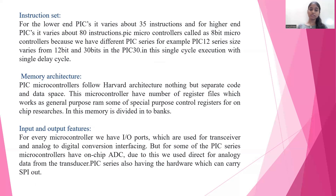There are different types of PIC series; for example, the PIC 12 series size varies from 12-bit up to 30-bit in PIC 30, with single-cycle execution and a single delay cycle. Memory architecture: PIC microcontrollers follow Harvard architecture — separate code and data space. The microcontroller has registers that work as general-purpose RAM and special control registers. Memory is divided into banks. For input and output features, every microcontroller has I/O ports used for the transceiver and analog-to-digital conversion. Some PIC series have an on-chip ADC, allowing direct use of analog data from the transducer.